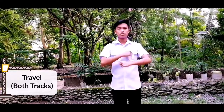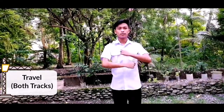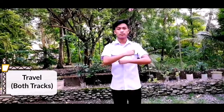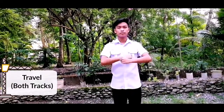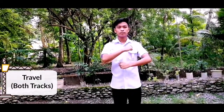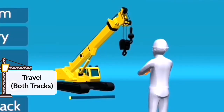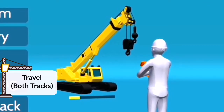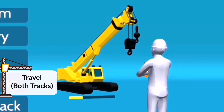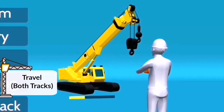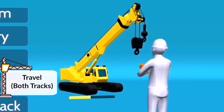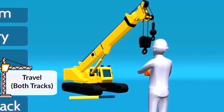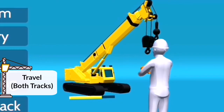Travel both tracks: rotate fists against each other in front of the body. Direction of rotation toward the body indicates travel forward; rotation away from the body indicates travel backward. This signal is for crawler cranes only.